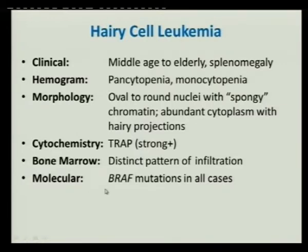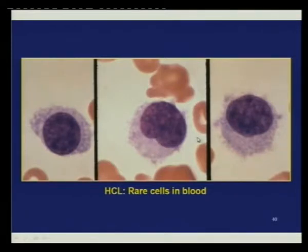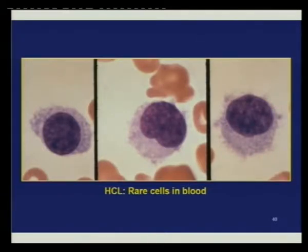The newest defining finding is B-RAF mutations in all cases of hairy cell leukemia — it has become the defining genetic marker. The cells show spongy chromatin appearance with little bean-like projections or indentations. The hairy processes require careful identification as staining can make them hard to see. They are also very few — not abundant in the peripheral blood. You really have to look for them; they're not going to come to you.